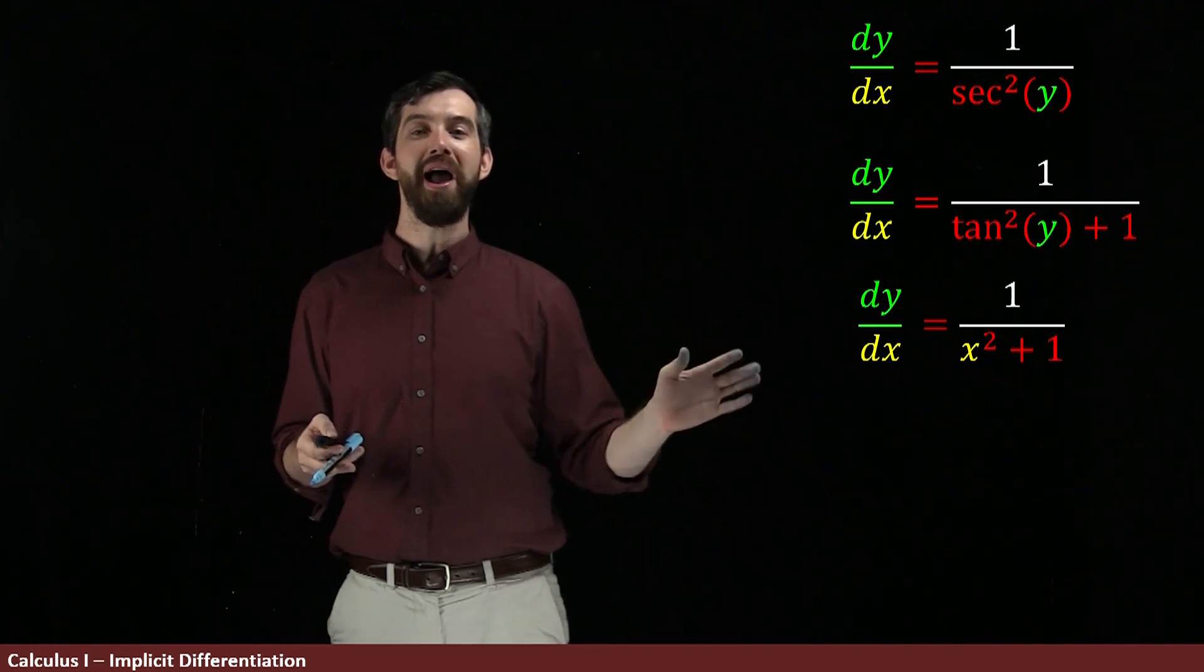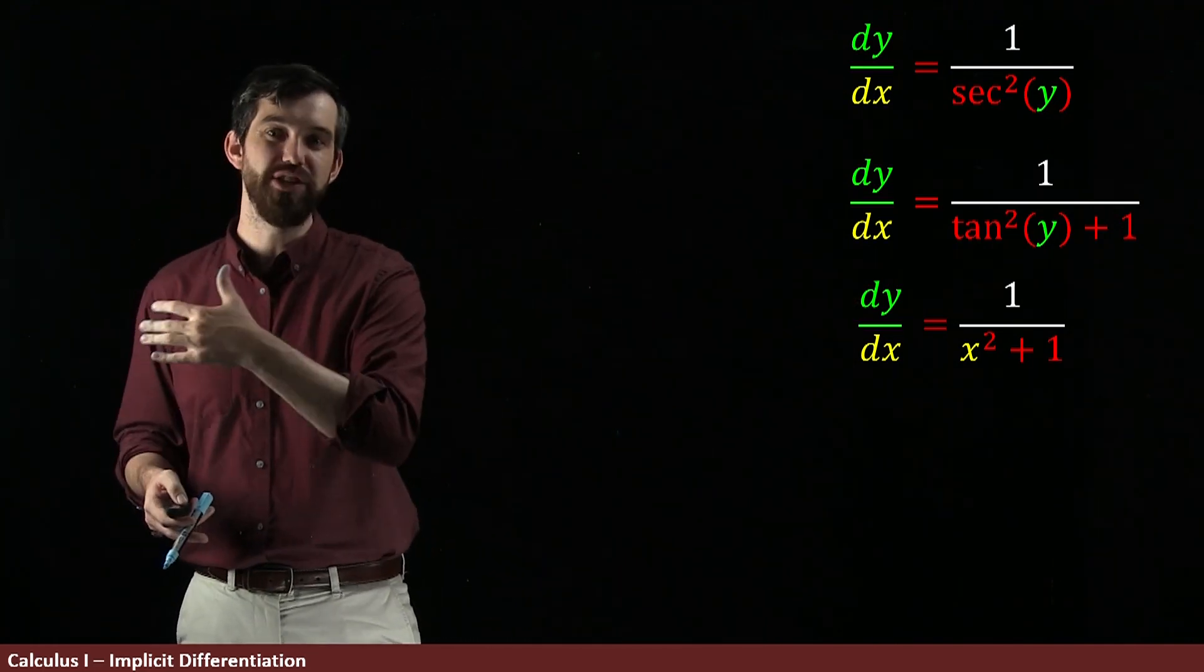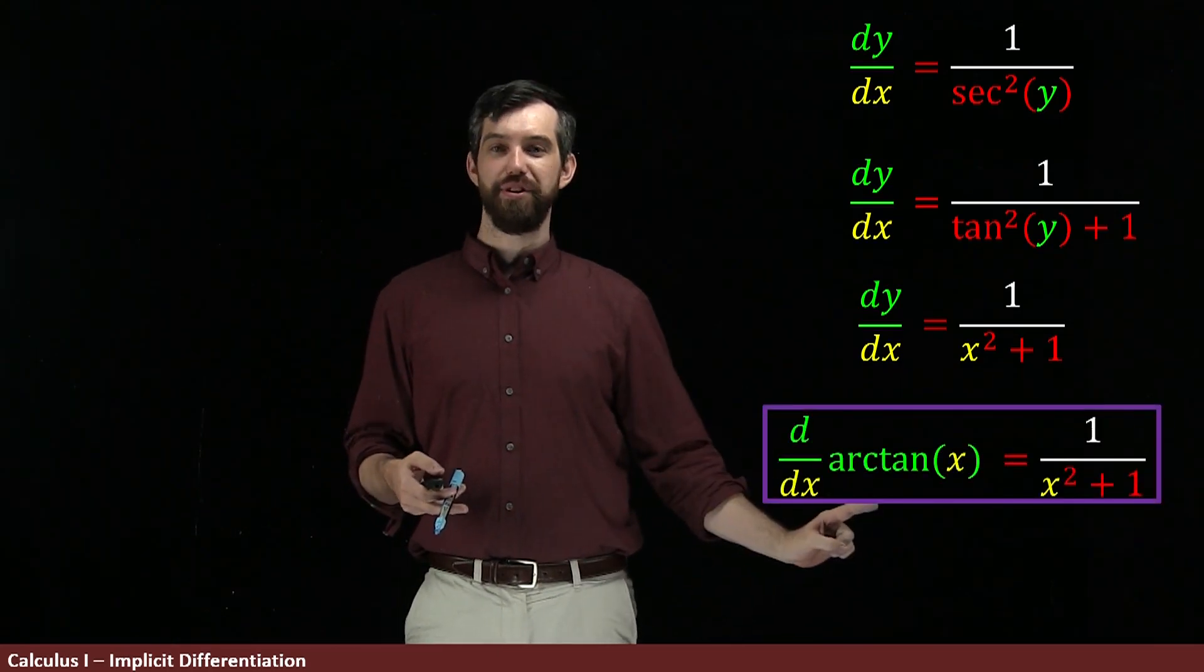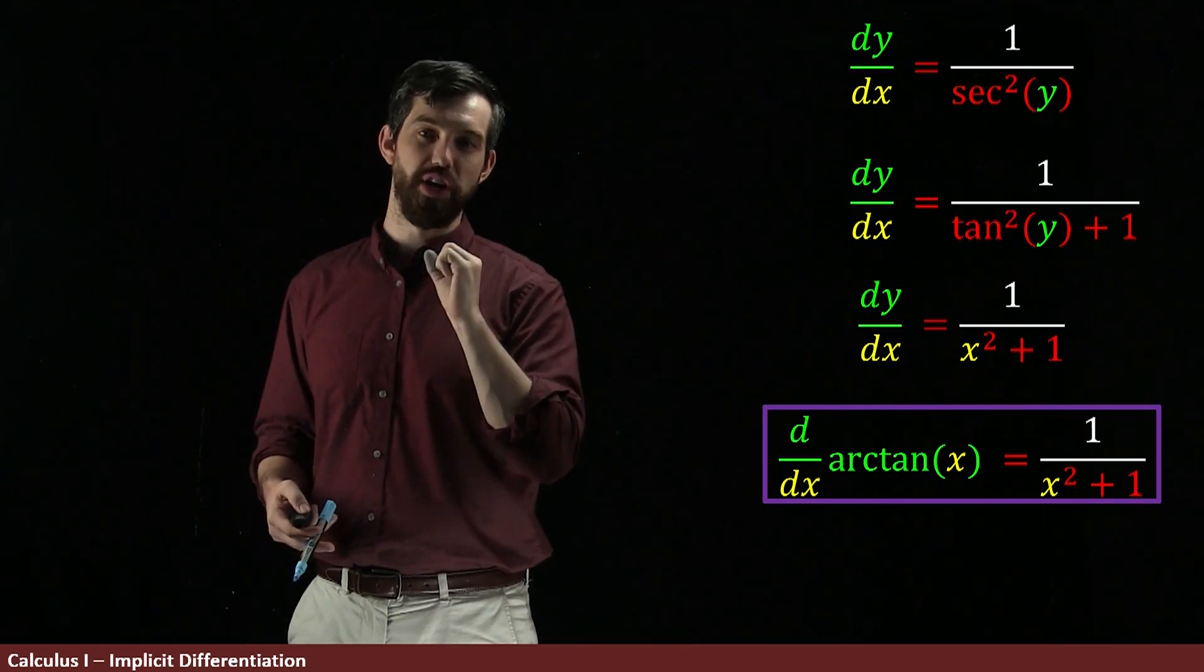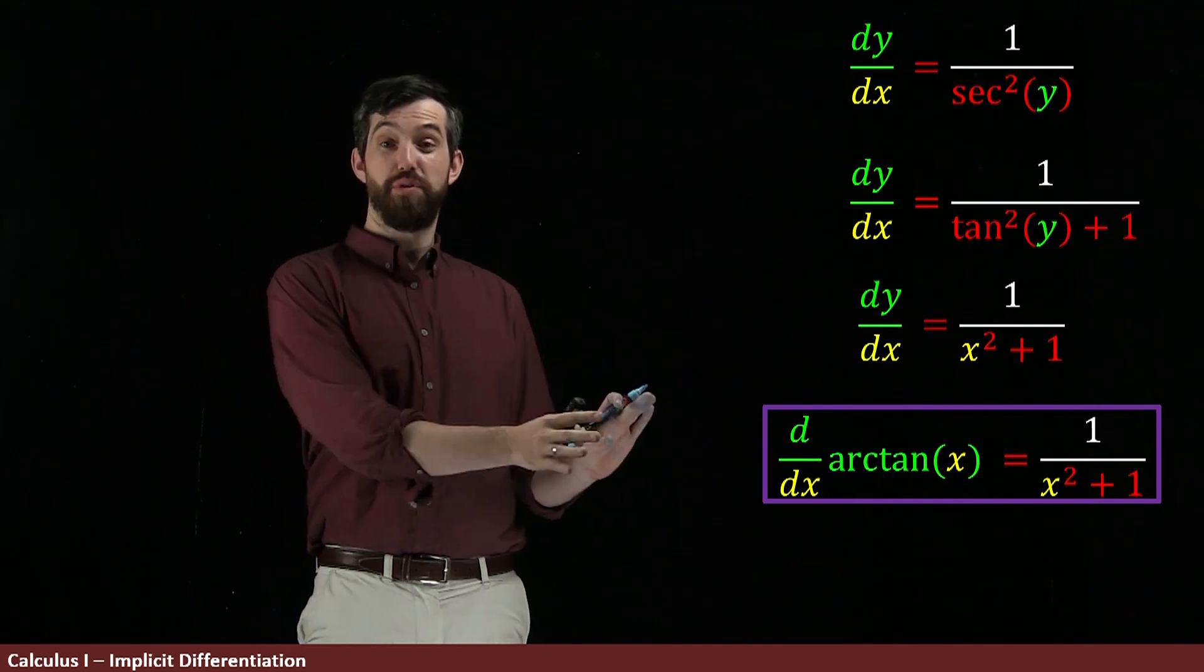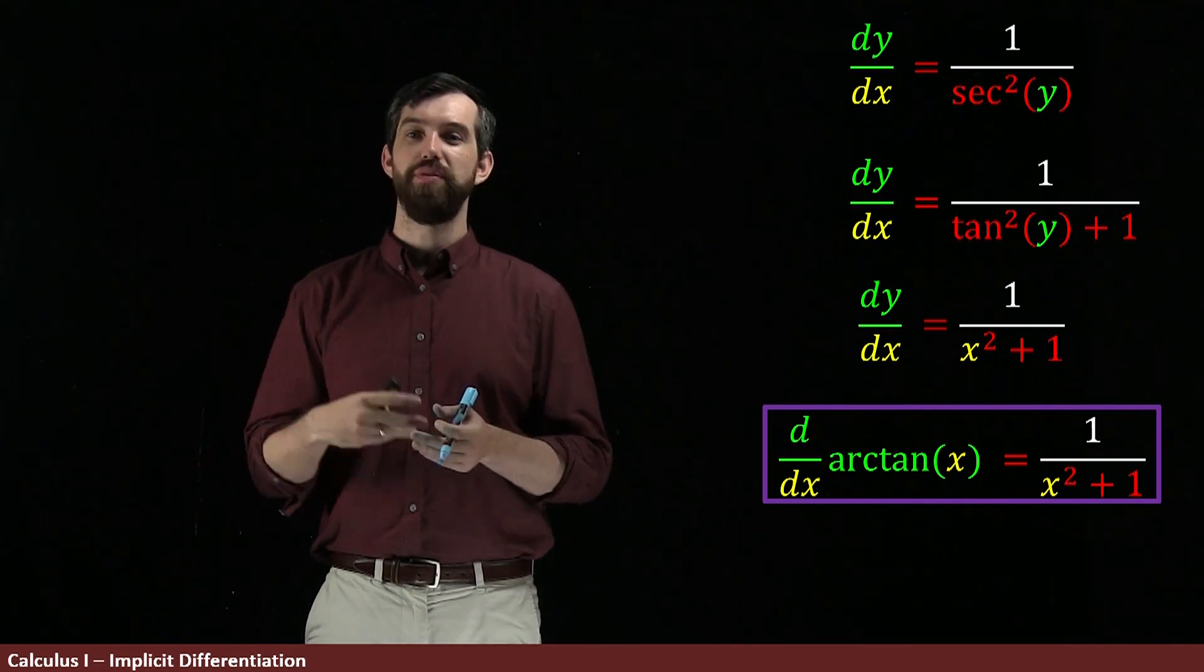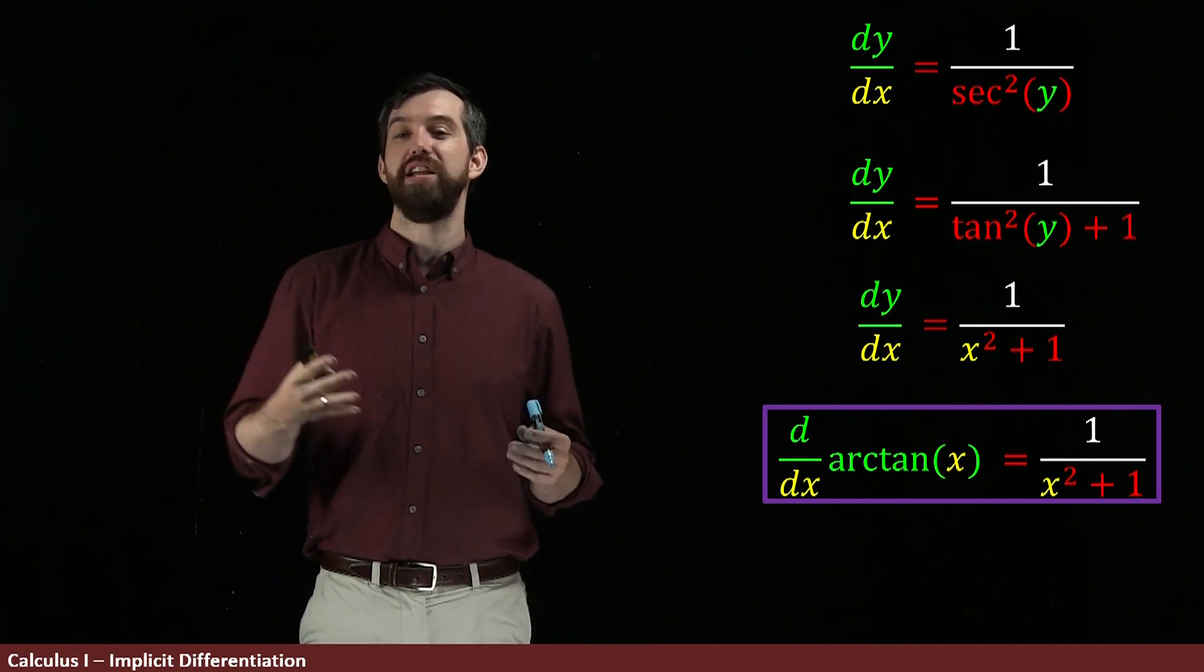And then, very final step, reminding ourselves that the y here, what was y, y was arctan of x, I get my final formula, which is the derivative of arctan of x, 1 over x squared plus 1, some function of x. The process that we've used to figure out the derivative of arctan, you can take the same basic process and figure out the derivatives of all the different ones, arccosine, arcsine, arccotangent, whatever you like.